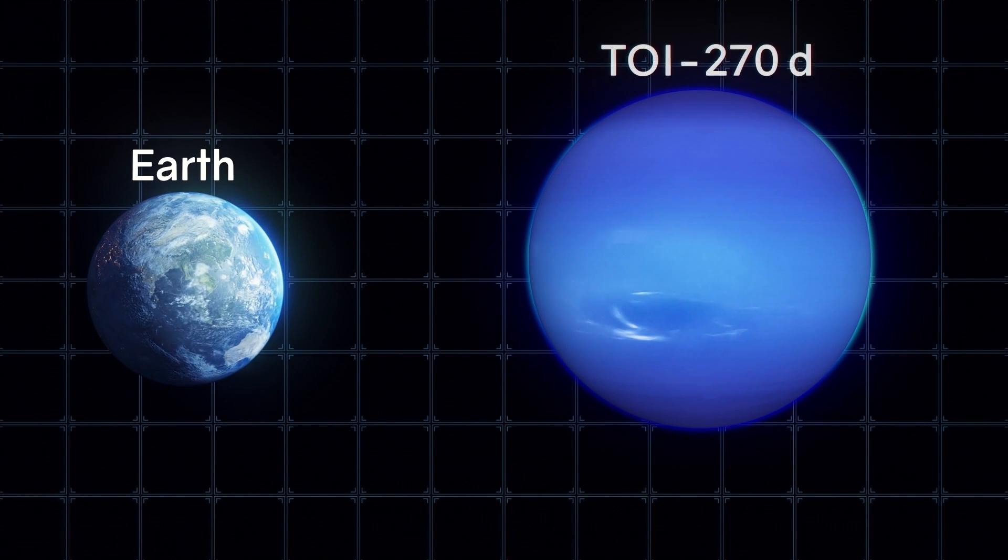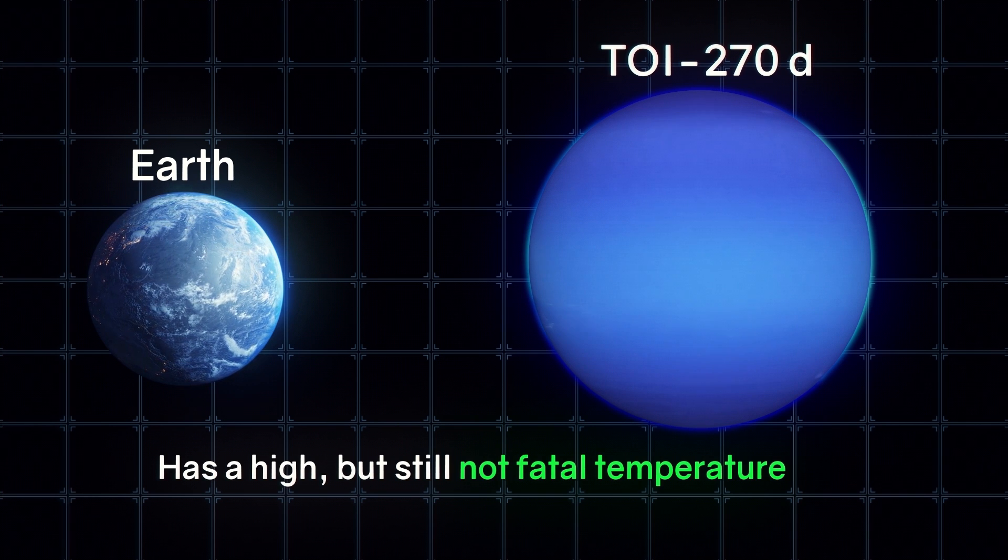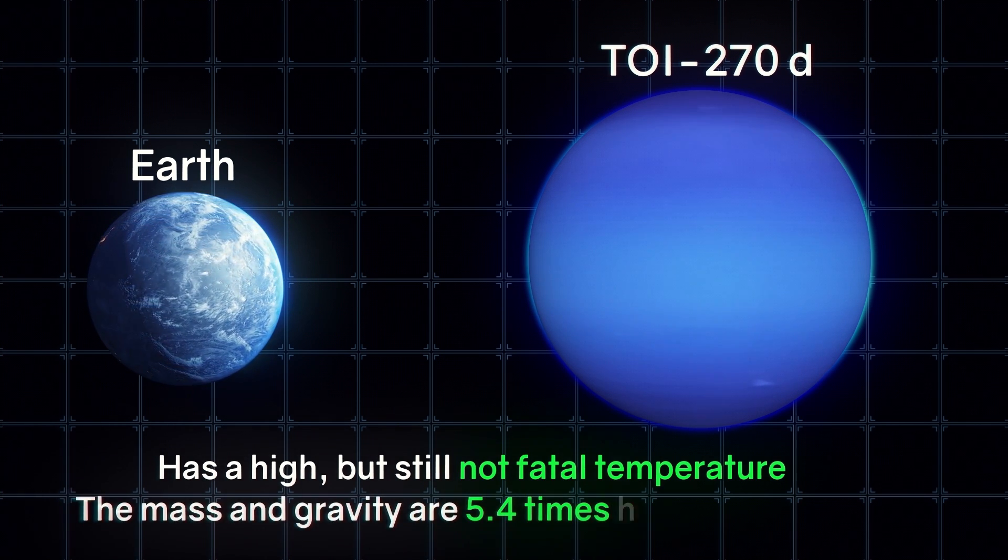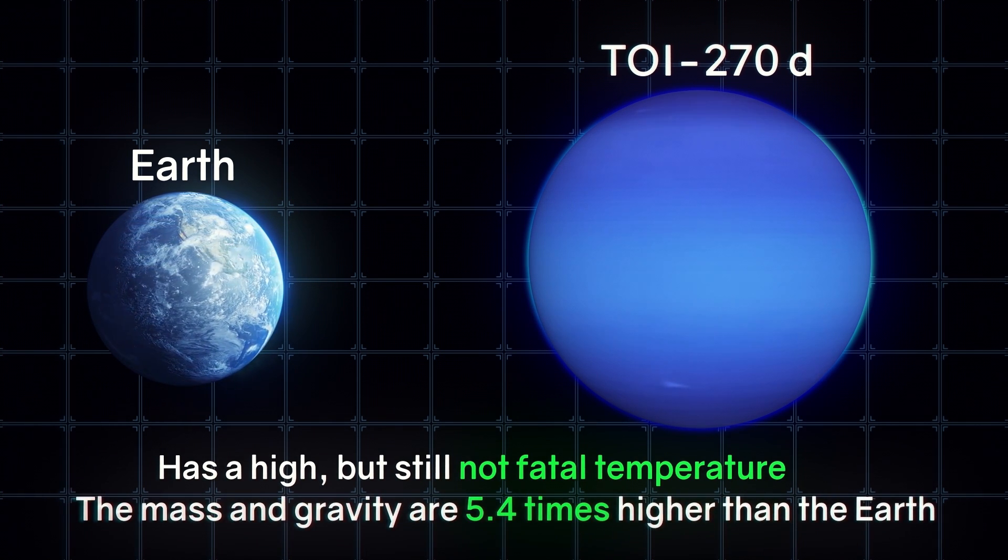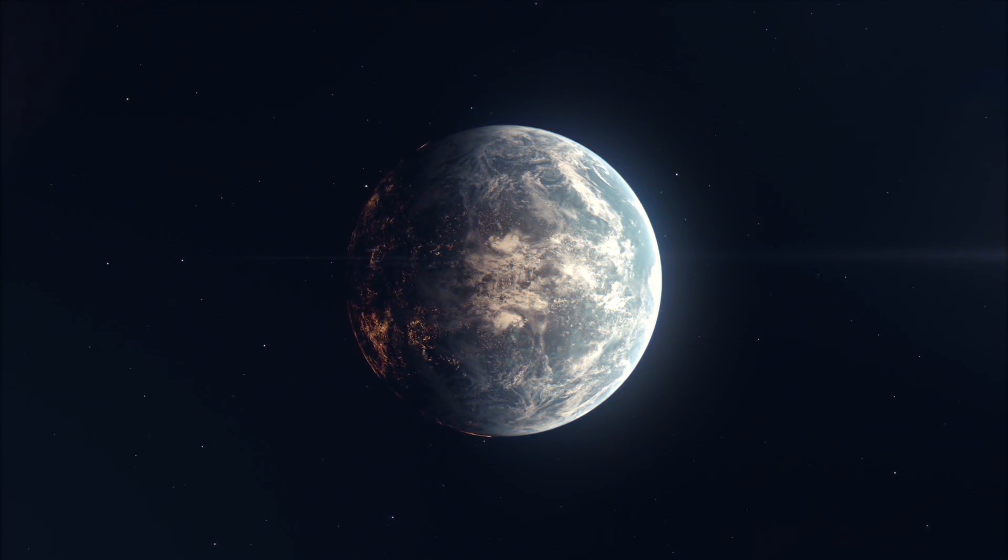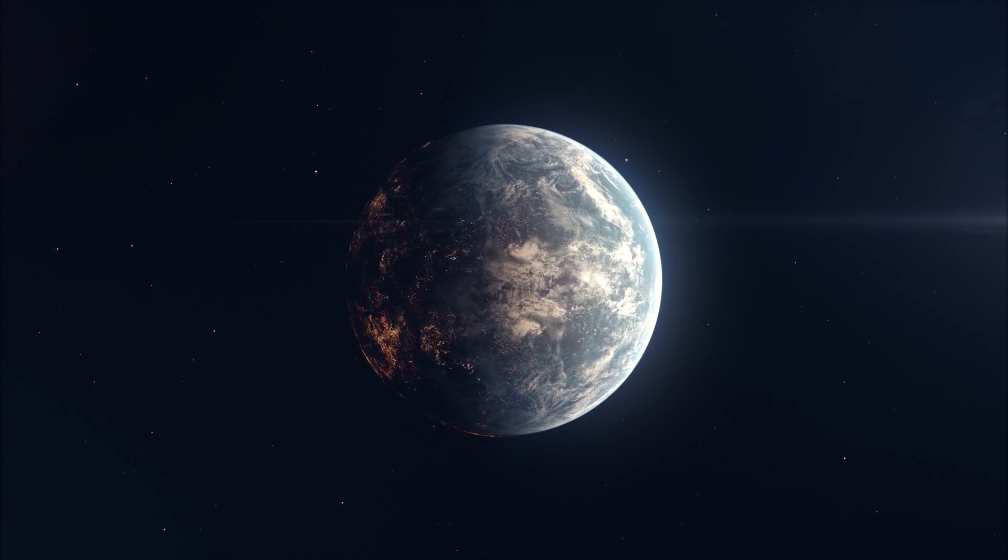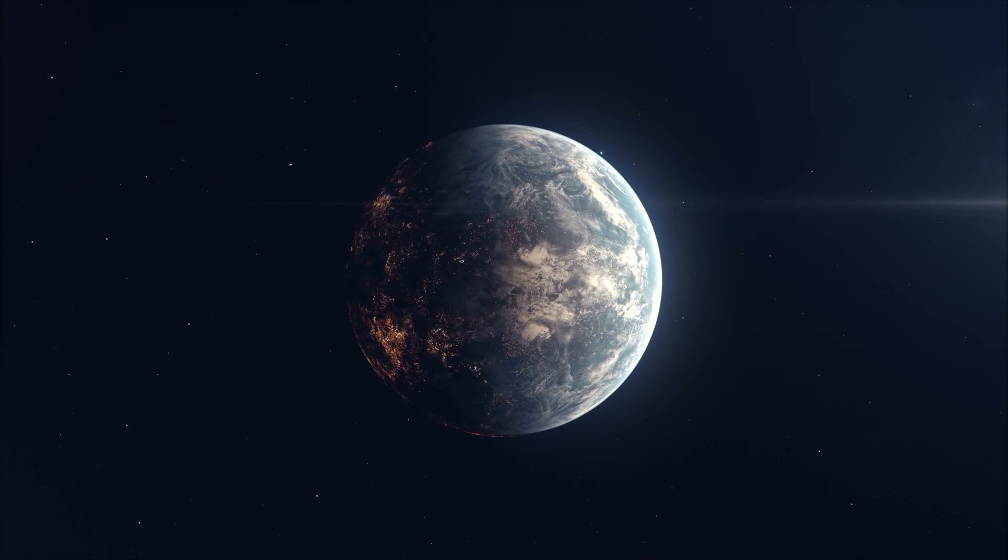The third-farthest planet, TOI-270 d, has a high, but still not fatal temperature. But the mass of the planet, and hence the force of gravity on its surface, is 5.4 times higher than the Earth's. A person there would weigh about 400 kilograms. So, if there is life there, then its representatives must be very miniature.